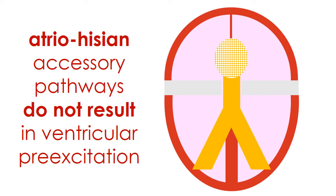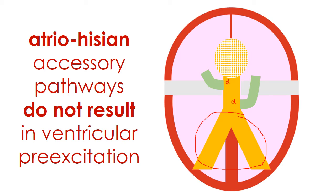The atriohisian accessory pathways do not result in ventricular pre-excitation. They can insert more proximally or more distally in the bundle of His, but the activation wavefront has to proceed over the normal bundle branch system to the ventricles. Therefore, they never result in ventricular pre-excitation.